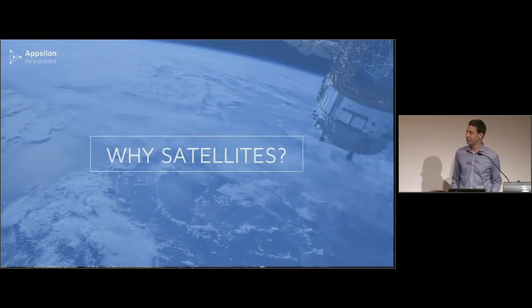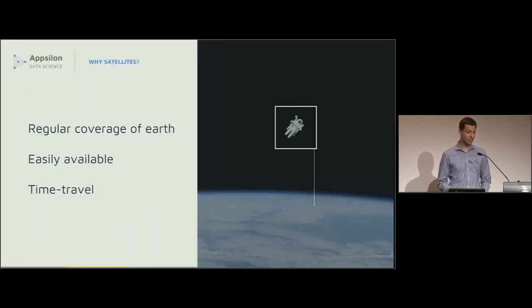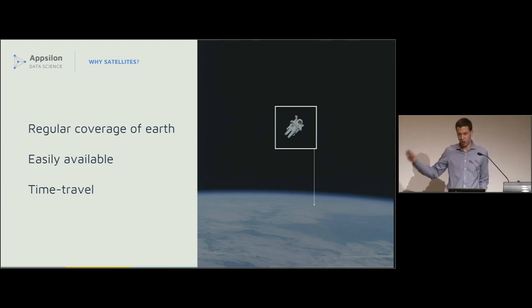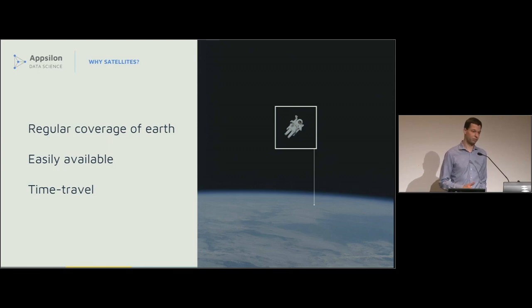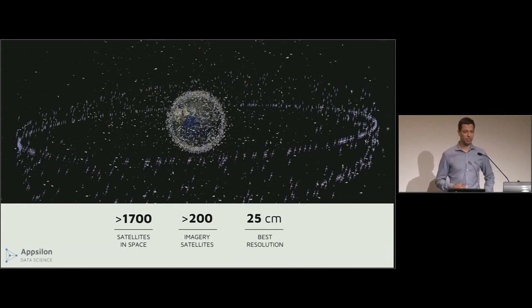Let's start with why satellite imagery — what data exactly do we have available and what parameters are important when choosing the source. Satellite images are a unique thing: we get regular coverage of essentially the whole earth, they're easily available, you simply download them without needing to deploy a drone or send an airplane. Some are available for free and they're pretty good. Currently we have more than 1700 satellites around earth, with over 200 being imagery satellites.